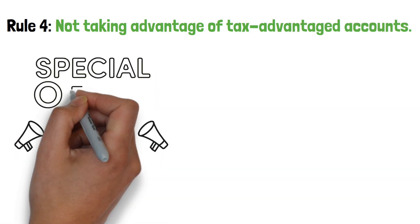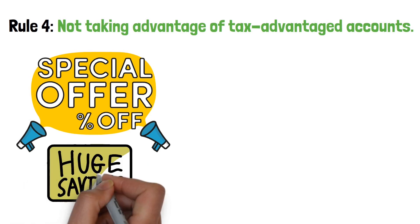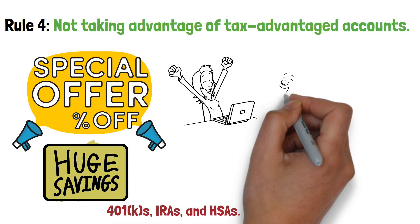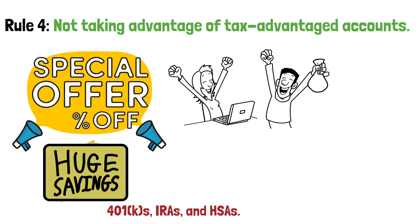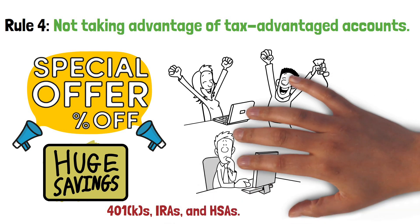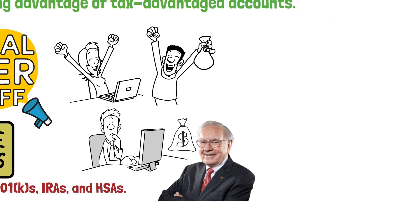Rule 4: Not taking advantage of tax-advantaged accounts. The government offers a variety of tax-advantaged accounts that can help you save money on your taxes. These accounts include 401(k)s, IRAs, and HSAs. By contributing to these accounts, you can reduce your taxable income, which can save you a significant amount of money. So if you're not taking advantage of tax-advantaged accounts, you're leaving money on the table.